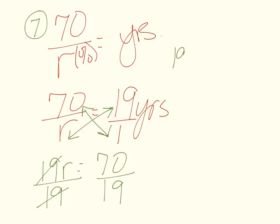So 19 goes into 70. Our answer will come out in percentage, and this one is ugly math, but you can round to the tenths place in APES. 19 goes into 70 three times; three times 19 is 57.